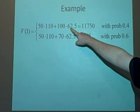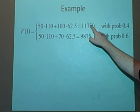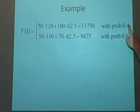So we've got 50 times 110 plus 100 times 62.5 is 11,750 with the probability 0.4. Again down here, 9,875 with probability 0.6.